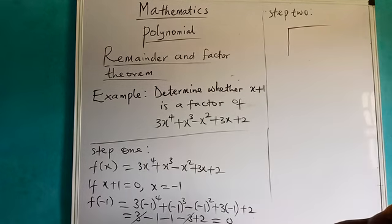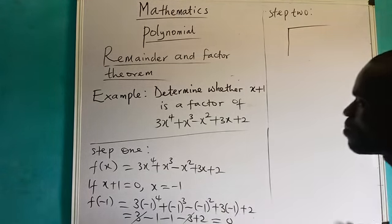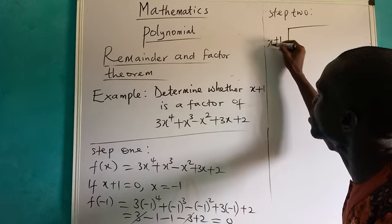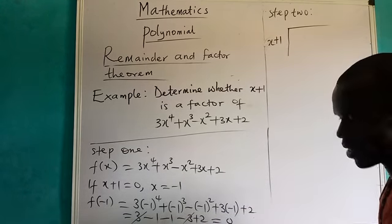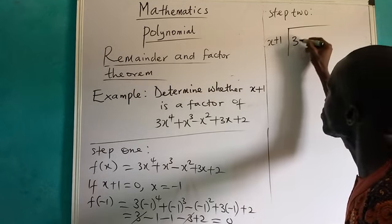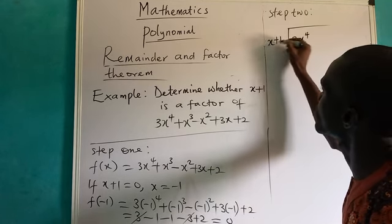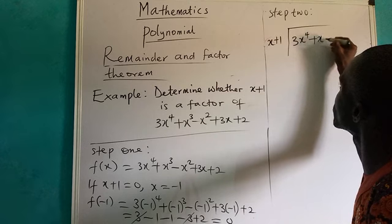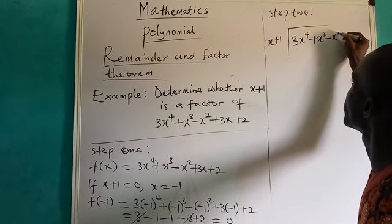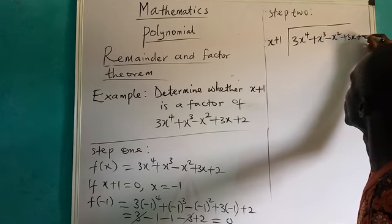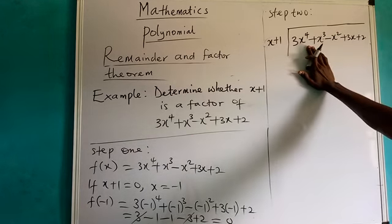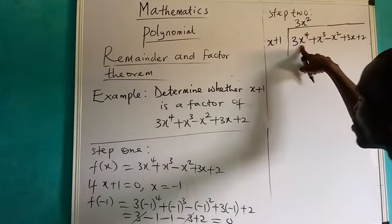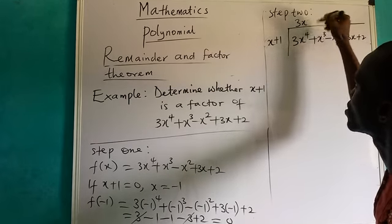S plus one will be on the outside, and the polynomial will be inside. The polynomial is 3s to the power 4, plus s to the power 3, minus s squared, plus 3s, plus 2. Now for the highest power, S divides into 3s⁴ to give 3s³.